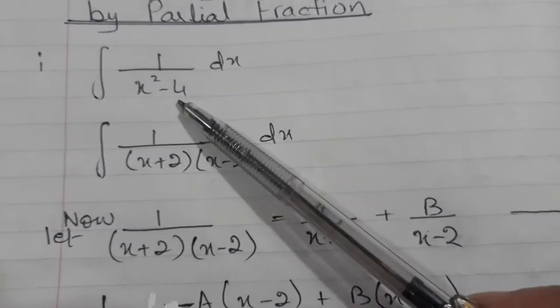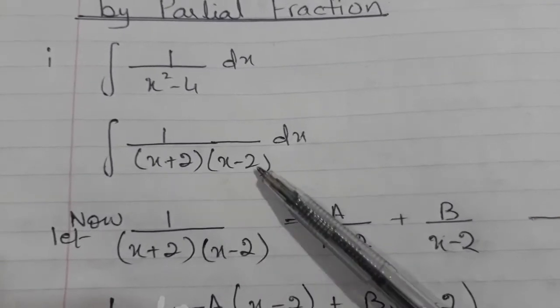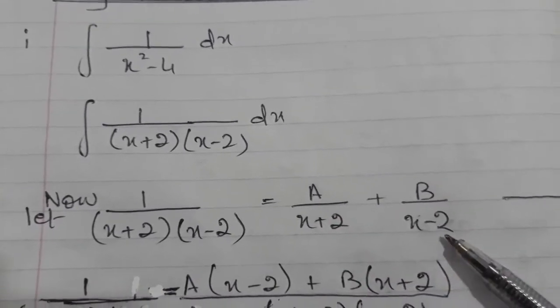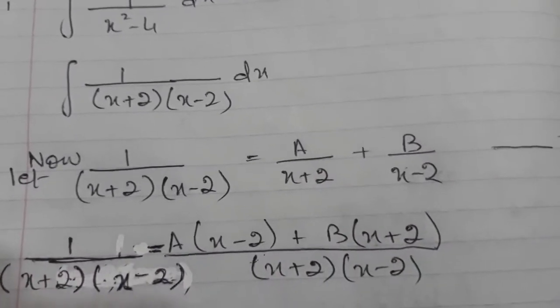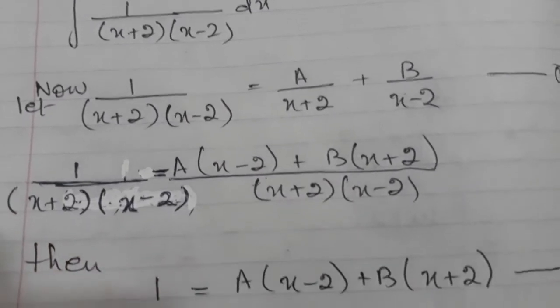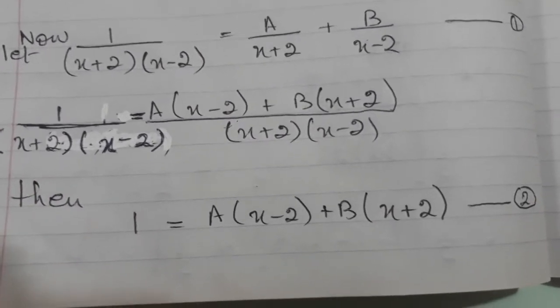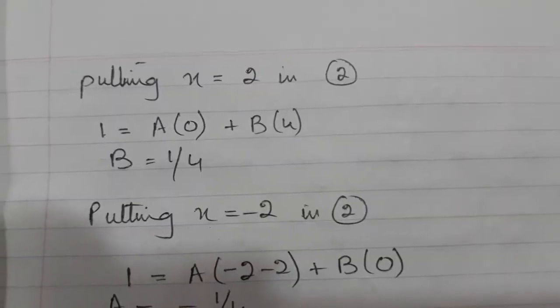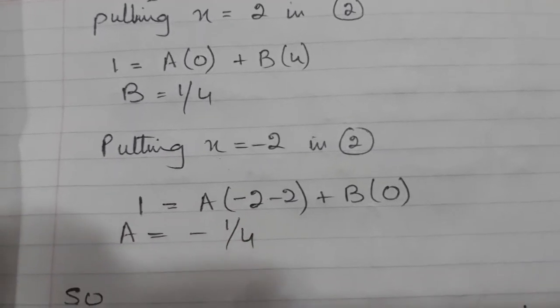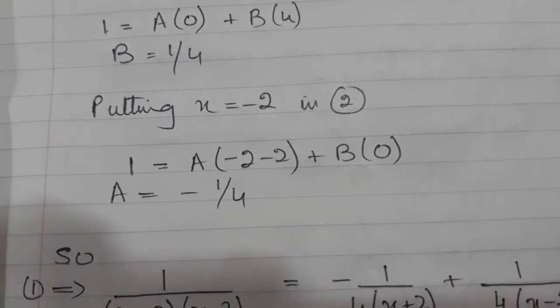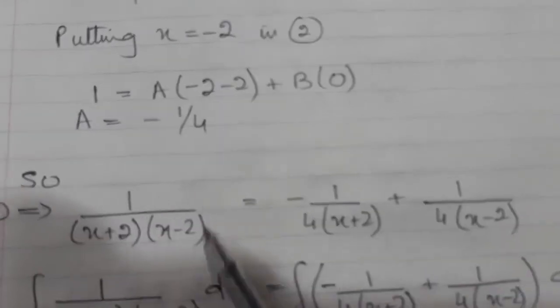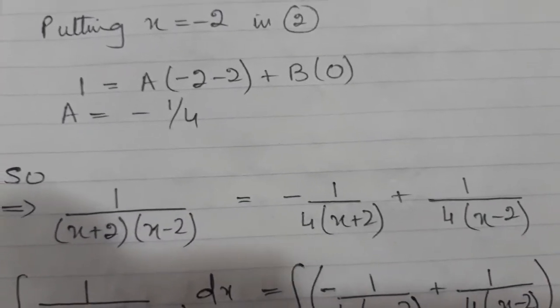I have factorized this denominator. They both are linear. According to partial fraction, it will be A over x plus 2 plus B over x minus 2. I will apply the concept of partial fraction and decompose this rational fraction. I have explained in detail the steps to find out the values of A and B. Once I have found the values of A and B, I know the decomposition of this rational fraction into partial form.